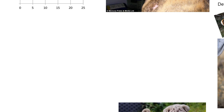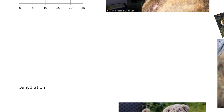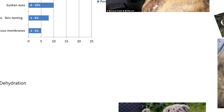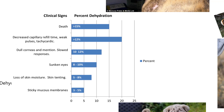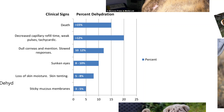Another disorder is dehydration. About 65% of the body weight is water weight — so in a 100-pound dog, you'd have 65 pounds of water. Let's look at a chart that shows what happens when we don't have all the water we need.